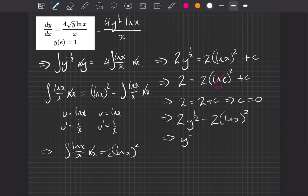Next step then, we'll divide by 2. So we get y to the half is equal to the square of natural log of x. And the next step, we will square both sides so we have y equals. So y is going to be equal to the 4th power of the natural log of x.